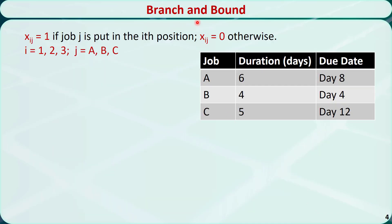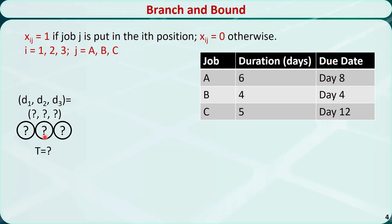We can solve this problem using the branch and bound method. First, let's define the decision variables. Xij = 1 if job J is put in the ith position, and Xij = 0 otherwise. I denotes the positions 1, 2, and 3. J denotes the jobs A, B, and C. At the beginning, we don't know which job should be put in which position, we don't know the delay of any job, and we don't know the total delay either.